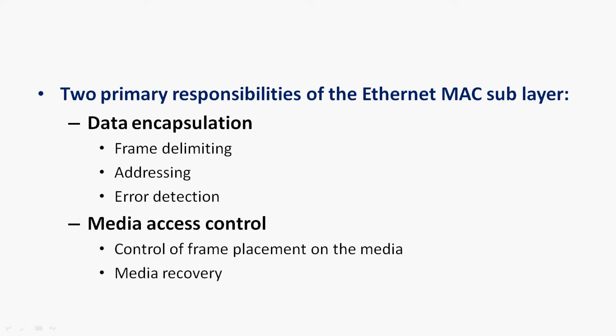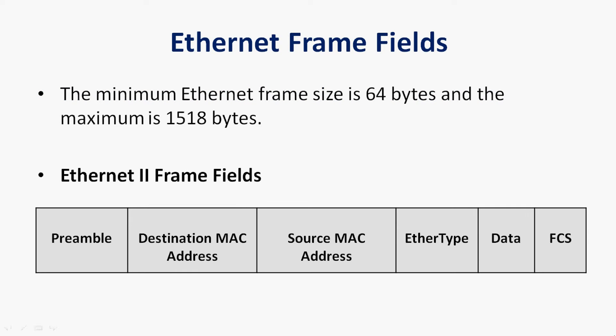There are two primary responsibilities of the Ethernet MAC sub-layer. The first is data encapsulation, which includes frame delimiting, addressing, and error detection. The second is media access control, which includes control of frame placement on the media and media recovery.